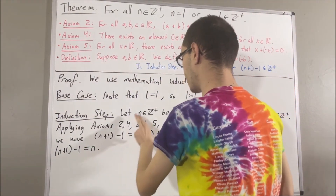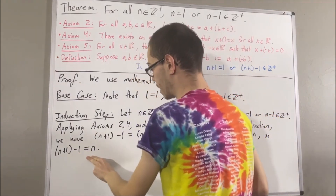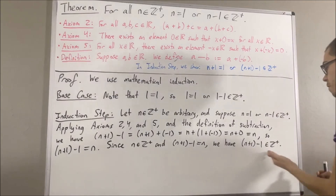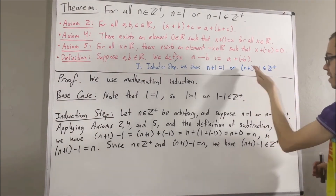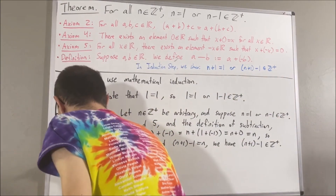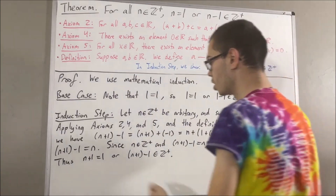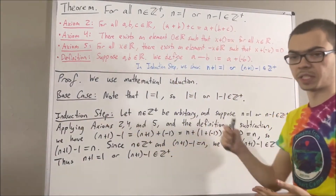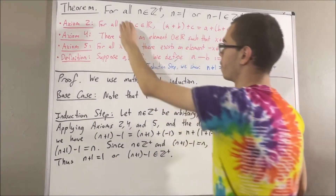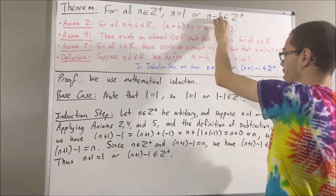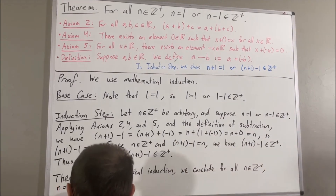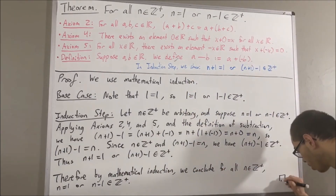But then, since n is a positive integer and n plus 1 minus 1 is equal to n, that tells us n plus 1 minus 1 is a positive integer. So, we have shown that at least one of these statements is true, and we can conclude that n plus 1 is equal to 1, or n plus 1 minus 1 is a positive integer. Proving this statement was the whole goal of the induction step, so this completes the induction step. Because we've completed both the base case and the induction step, we can conclude by mathematical induction: for all positive integers n, n is equal to 1, or n minus 1 is a positive integer. And so, this completes the proof.